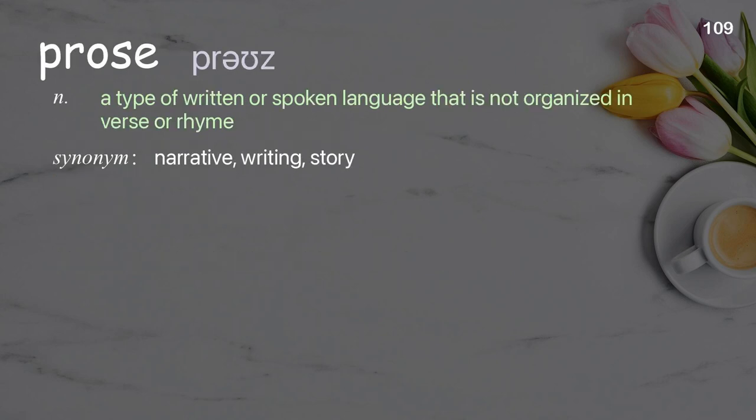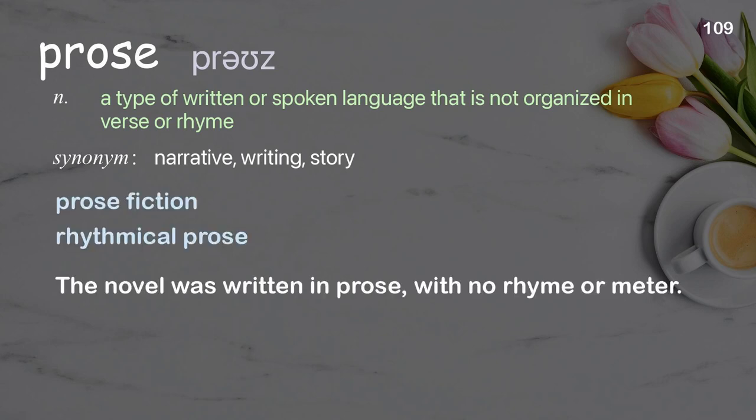Prose: a type of written or spoken language that is not organized in verse or rhyme. Examples: prose fiction; rhythmical prose. The novel was written in prose with no rhyme or meter.